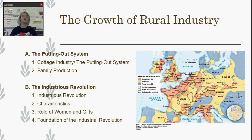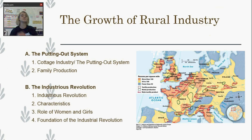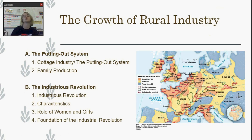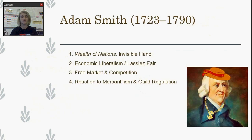Everybody in the family involved in cottage industry is going to contribute — the women, the children, the men. And this is going to lead to what we call the industrious revolution, which is not the same as the industrial revolution. It's the beginnings of that — we're seeing more people getting involved in industry over farming. More people are working, particularly girls and women, who are going to be given more opportunities. Occasionally they will be working outside of the home, and this is really the foundation for what will eventually become the industrial revolution with factories.